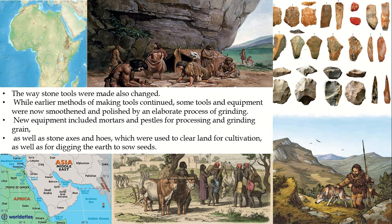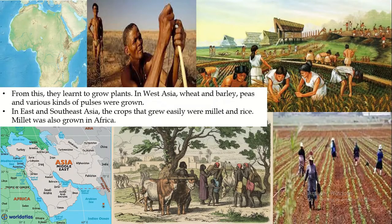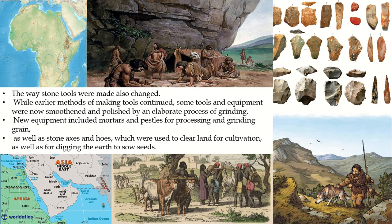In this module we learned about the period prior to the adoption of agriculture and what was the main source of food for people, the major crops grown in West Asia, East and Southeast Asia, and Africa, the developments which led people to live a settled life, and also the changes in stone tools. Stay tuned, we'll catch you in the next.